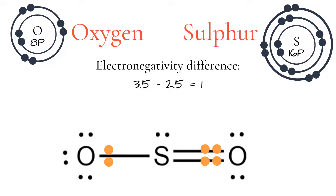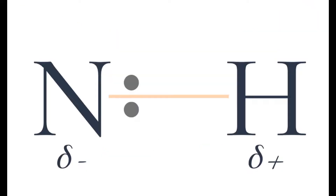If a bond occurs between two different atoms, the bond is polar because the two atoms have different electronegativities, or pulls, on the bonded electrons. The bonded electrons are shared unevenly between the two atoms as they sit much closer to the more electronegative atom, leaving that atom slightly negative and the other atom slightly positive. This means there is a separation of charges across the bond, and so it has a dipole. The exception to this is the C-to-H bond, or carbon-to-hydrogen bond. Although it occurs between two different atoms, the difference in electronegativity between these two atoms is less than 0.5, and so the bond is considered non-polar.